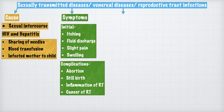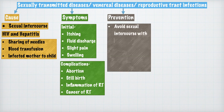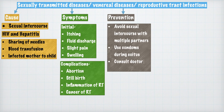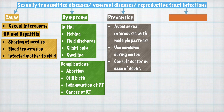Complications can even include cancer of the reproductive tract. These STDs can be prevented by three main measures: avoiding sexual intercourse with multiple partners, use of condoms during coitus, and consulting a doctor at the first sign of any initial symptom.